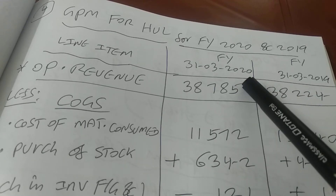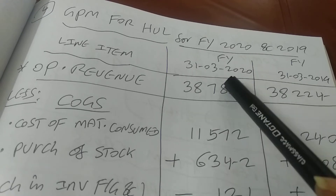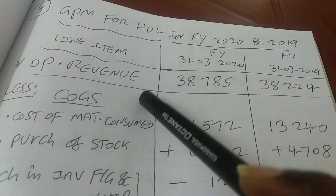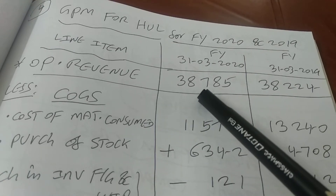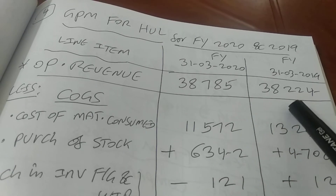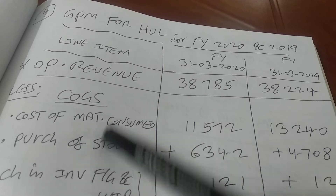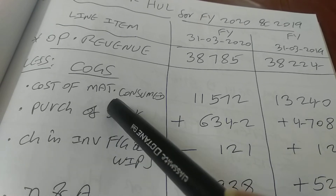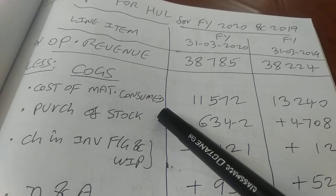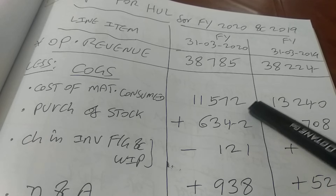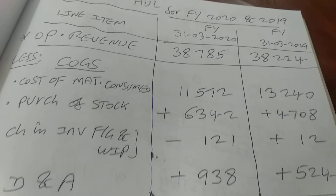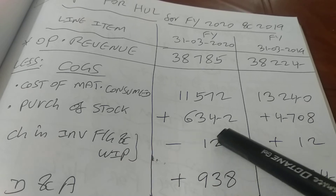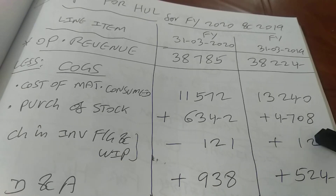The data covers year ending 31-3-2020 as well as the previous year ending 31-3-2019. Operating revenue for the latest year is ₹38,785 crores and for the previous year it is ₹38,224 crores. To find cost of goods sold, look at the other line items: cost of material consumed is ₹11,572 crores for 2020 and ₹13,240 crores for the previous year. Then add purchase of stock in trade: ₹6,342 crores for 2020 and ₹4,708 crores for the previous year.